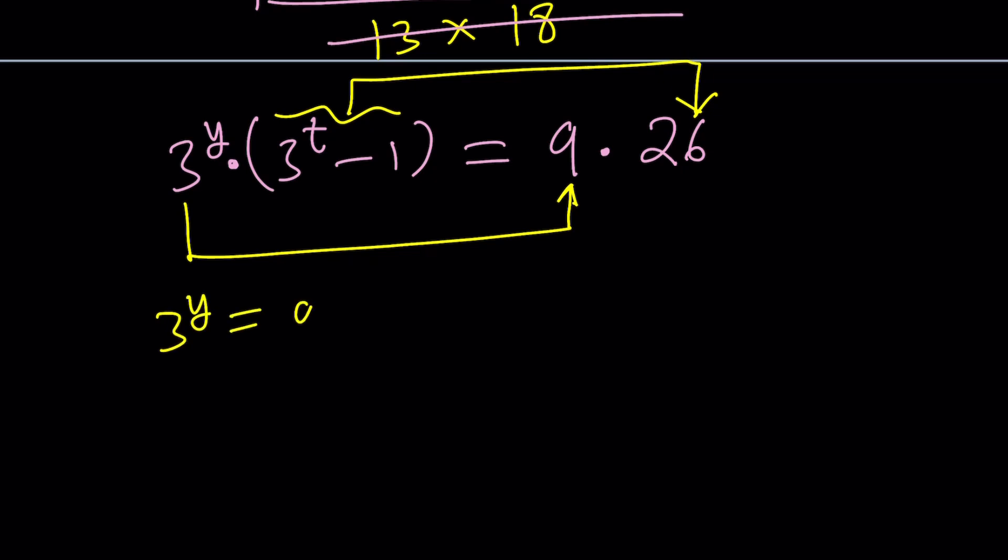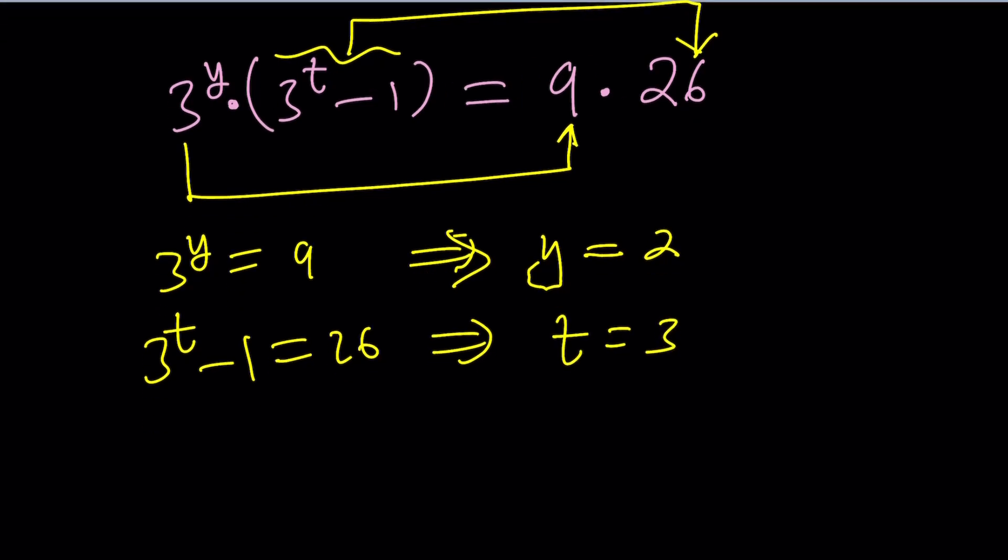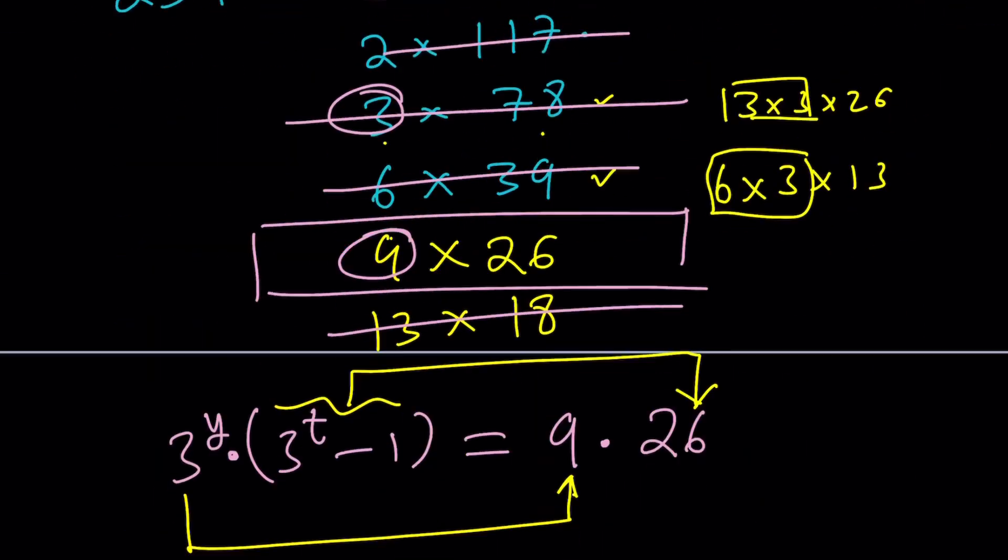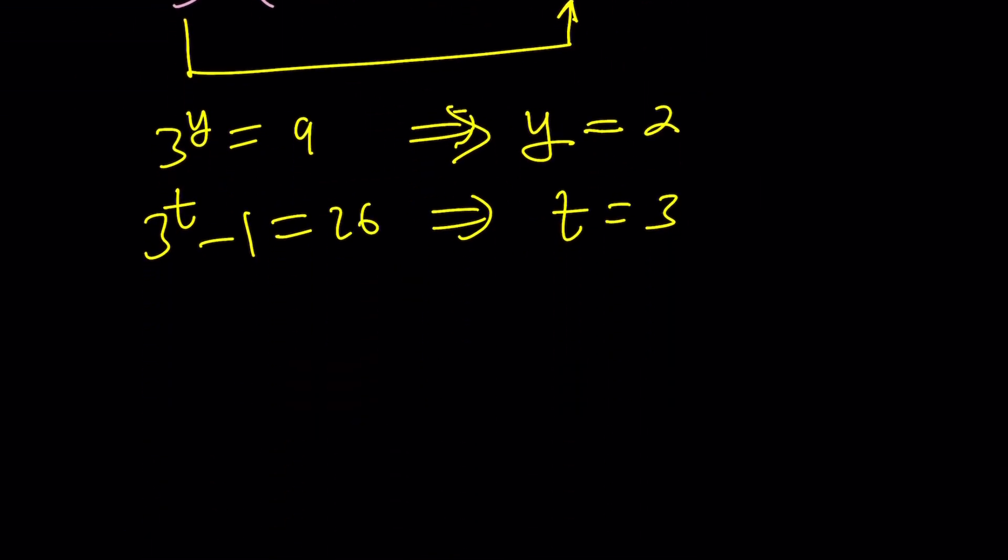So, 3 to the y equals 9, and from here you get y equals 2. We are looking for x and y, and 3 to the t minus 1 is equal to 26. From here, 3 to the t is 27, which means t is equal to 3. I wasn't looking for t, but I was looking for x and y, and x is y plus t. Since t is equal to 3, x is equal to 2 plus 3, which is 5. So, x is 5, y is 2.